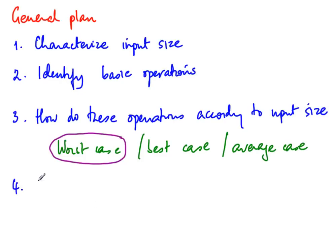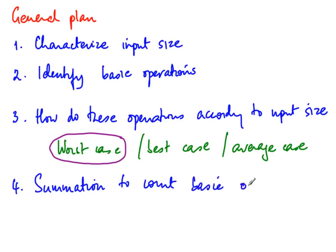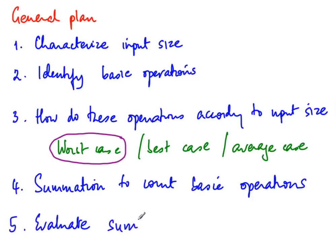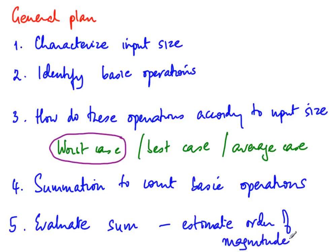After identifying operations, we set up a summation to count basic operations across all loop iterations, and the last step is to evaluate that sum. In examples like this one, you can add it up and get an explicit answer; otherwise, you at least want to estimate the order of magnitude — whether it is n, n², or something else. So our basic recipe is: characterize the input, identify the basic operations, check how they vary with input size, set up a sum, and solve the summation.